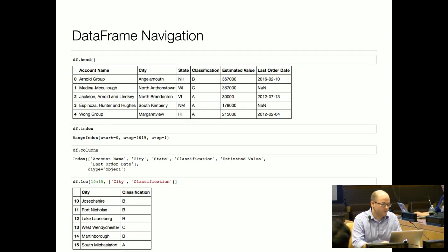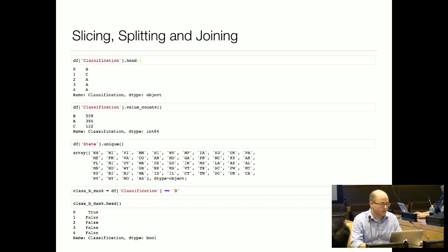At the bottom here you can see we have sliced our DataFrame two ways using the loc method — first by rows and then by columns. So we have rows 10 through 15, and then we've just taken the city and classification columns. That's the basics of the DataFrame object. Now we'll talk a little bit more about slicing, splitting, and joining.